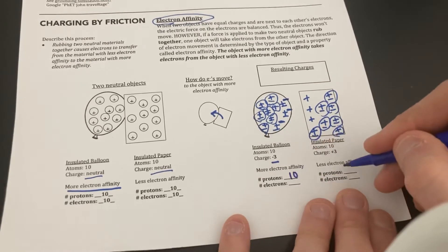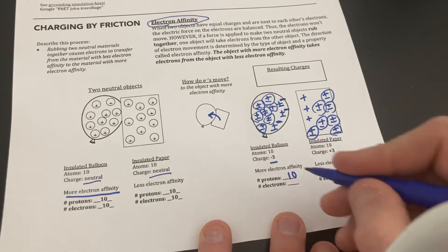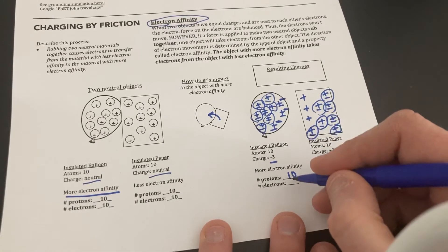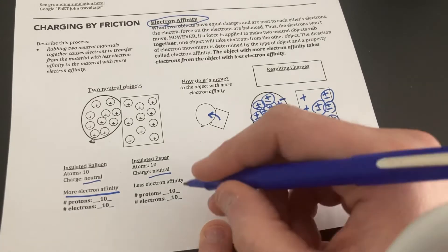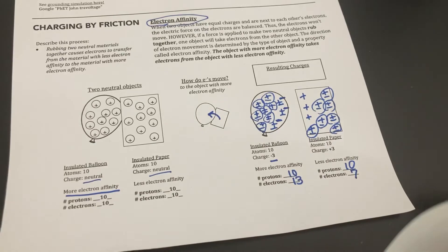So in terms of the amount of protons, remember protons always stay the same. That's what makes up the mass of those objects, but electrons can move. So this one gained three electrons. It has a charge of negative three. So it has 13 electrons here. Three left the other one, so now we're at seven here, still same amount total.